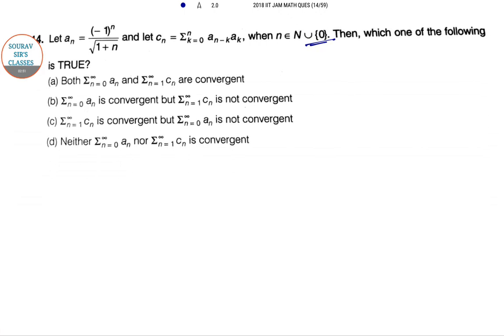So in this case we have to put some values like n equal to 0, 1, 2 dot dot dot n. So what we get? a_0 is 1, a_1 is minus 1 by root 2, a_2 is 1 by root 3, a_3 is minus 1 by root 4 and so on.